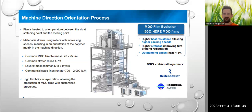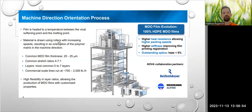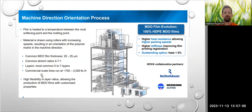The MDO machine process — if you can see here — is basically a massive tower with a conveyor belt setup. It goes all the way up, drops down, and then uses rollers to pull it through the machine. It is heated to a temperature and drawn using the rollers, typically 20 to 25 microns thick. A common stretch ratio is 4 to 7 to 1. In terms of layers, you're mostly going to have 5 or 7 layers, and commercial-scale lines run between about 700 to 2,000 pounds per hour.